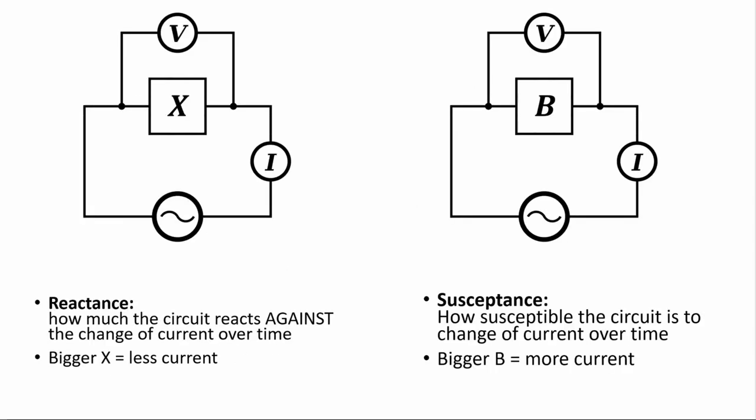The terms reactance and susceptance have a certain linguistic logic to them, just like resistance and conductance do. Reactance is the measure of how much a circuit reacts against change in current over time, and susceptance is the measure of how much a circuit is susceptible to conducting a changing current.